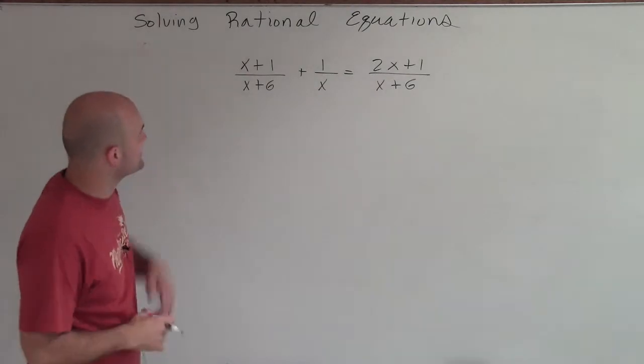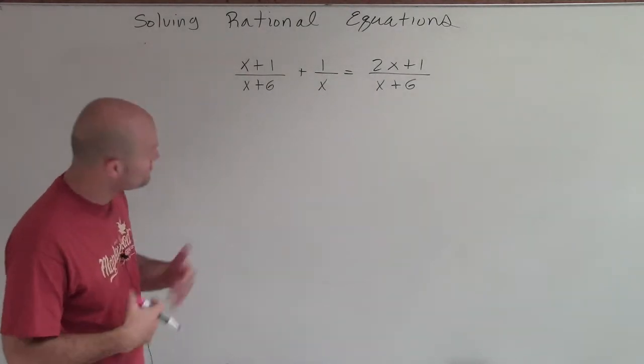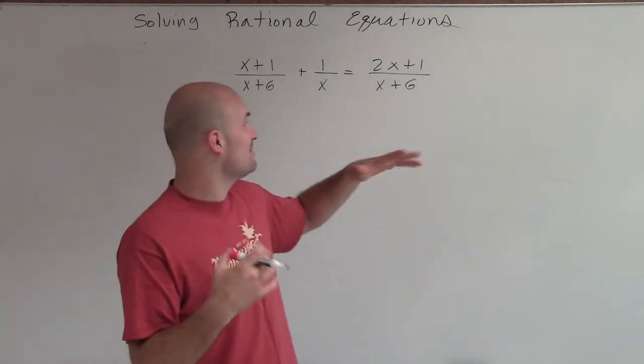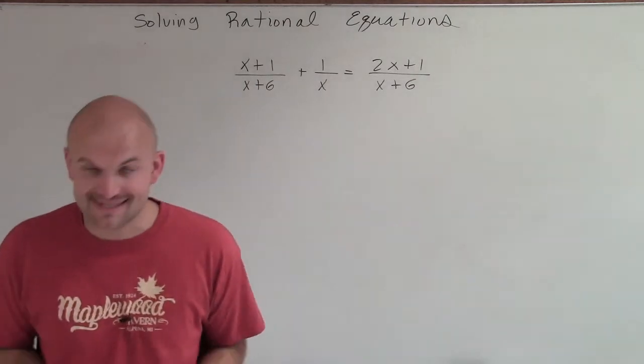Welcome. So what I have here is x plus 1 divided by x plus 6, plus 1 divided by x, equals 2x plus 1 divided by x plus 6.